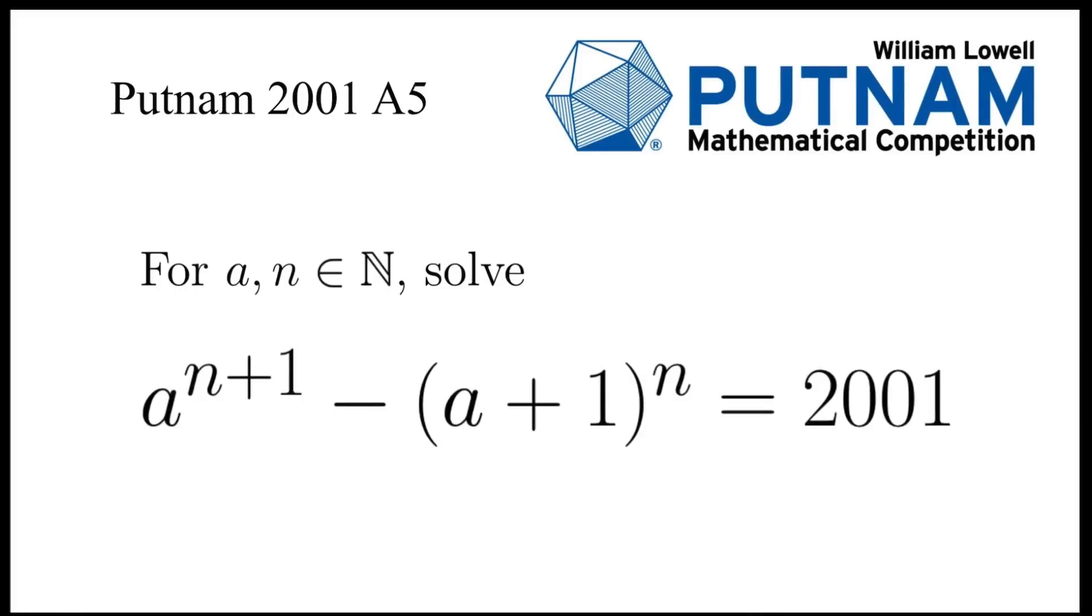In this video, we are going to solve an equation taken from Putnam 2001. For natural numbers a and n, solve the equation a to the power n plus 1 minus a plus 1 all to the power n equals 2001.